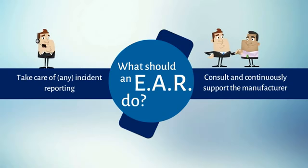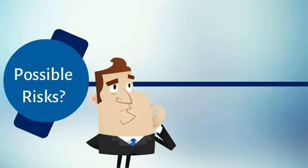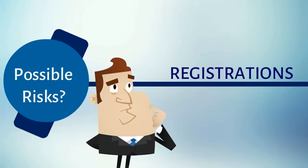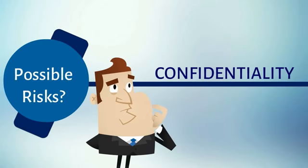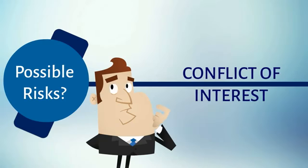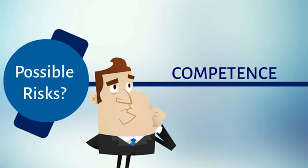What are the possible risks? Here are some of the risks when designating a distributor in Europe as EAR. Registrations: disagree on price or other conditions — what will happen to your EU registrations when cutting relations with a distributor? Confidentiality: disclosing your secrets and technical documentation to a distributor? Conflict of interest: distributors have commercial interests; regulatory compliance is not at the top of their priority list. Competence: who will advise you on EU regulations? For example, will a distributor in Italy know the national laws in Poland or the UK? Probably not.